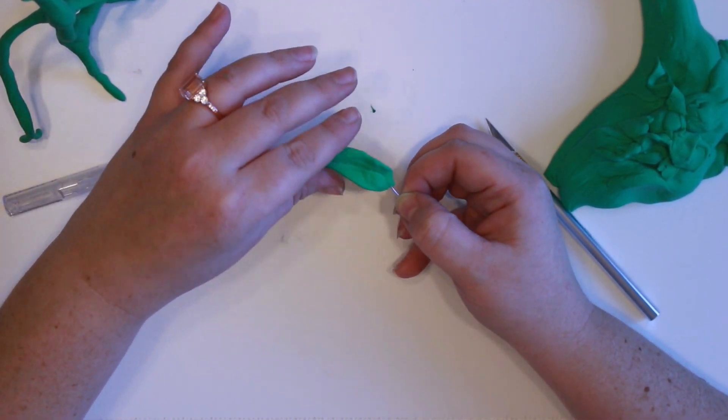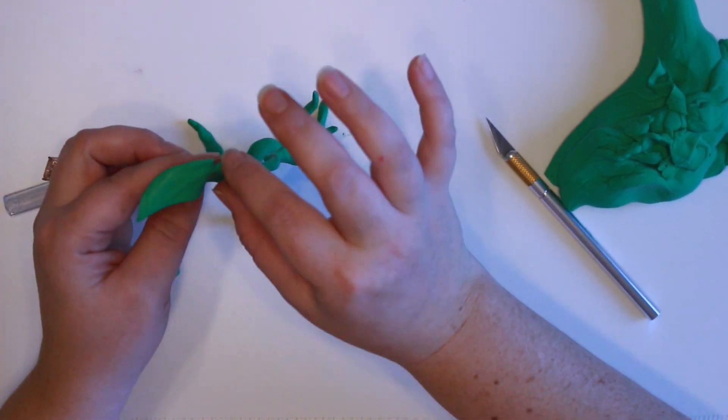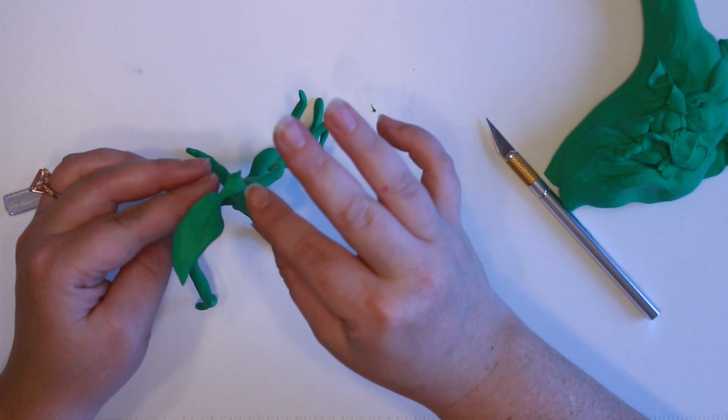And then I'm just going to stick this in the Model Magic at the top of his head and find the shape that I like and let it dry that way.